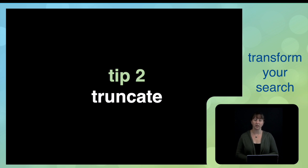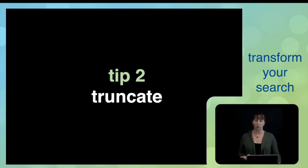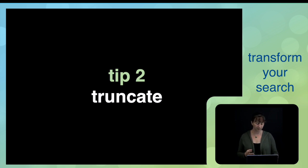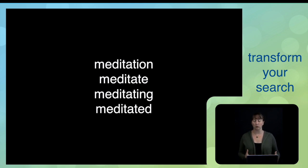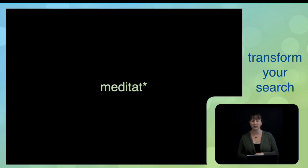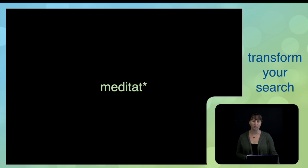Tip two is truncation, and this tip is really about increasing the reach of each synonym you came up with in tip one. Truncation is a tool that allows you to search for the root of a word and then have the database fill in any possible endings. For example, if my search term is meditation, that word could be meditation, meditate, meditating, or meditated — but I can search all of those terms just by shortening it down to meditat with an asterisk.